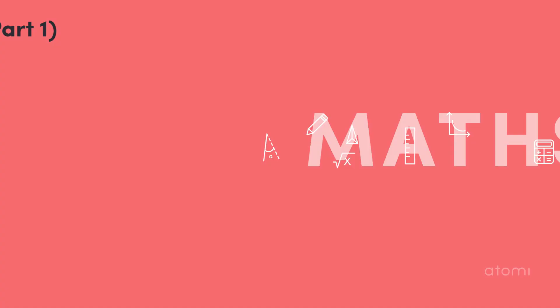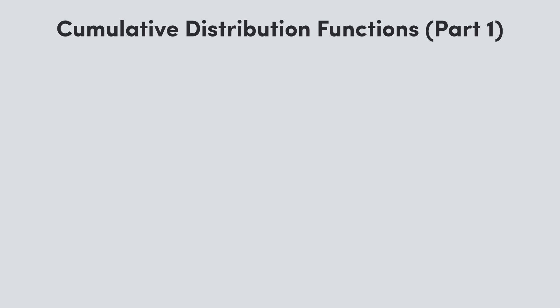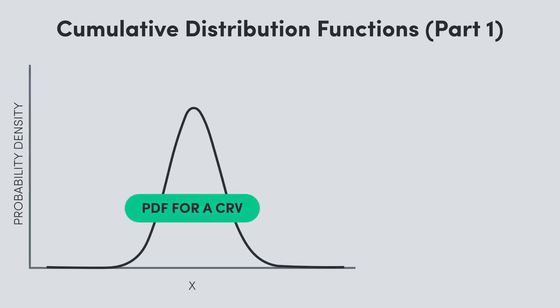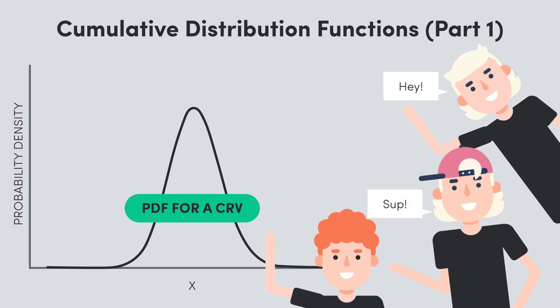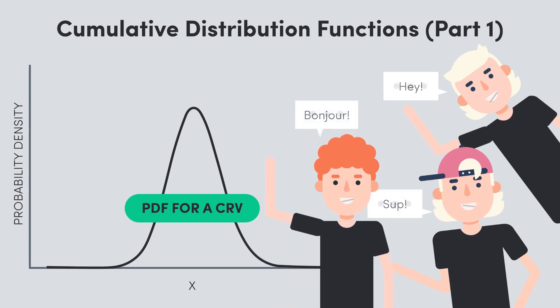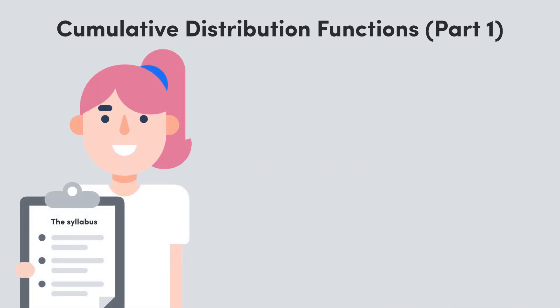Hello everyone and welcome back. We've seen probability density functions for continuous random variables, and now we're going to introduce its younger brother, or older brother, or cousin. You know a family analogy really wasn't the best way to go here. In any case, I'm talking about the CDF, or the cumulative distribution function.